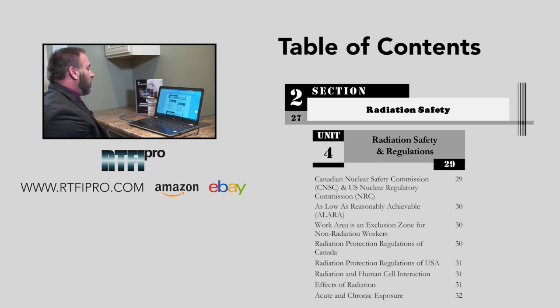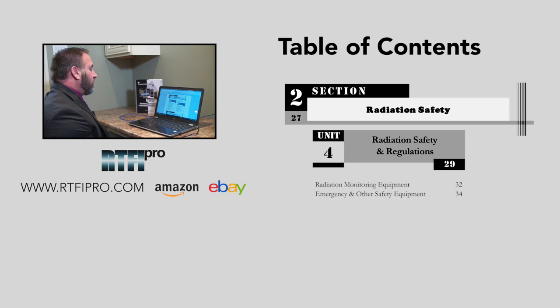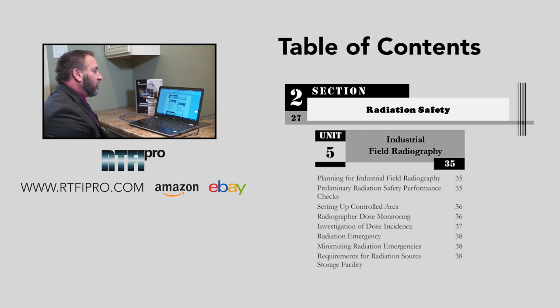Unit four also covers work areas and exclusion zones for non-radiation workers, the radiation protection regulations of Canada, the radiation protection regulations of the USA, radiation and human cell interaction, the effects of radiation, acute and chronic exposure, radiation monitoring equipment, and emergency and other safety equipment.